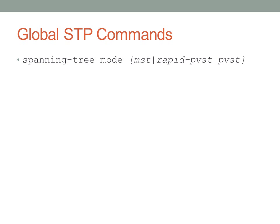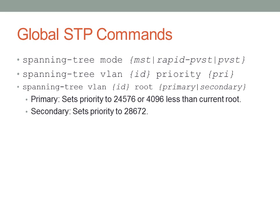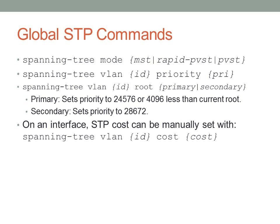Now let's look at global spanning tree commands. 'Spanning-tree mode' determines what type of spanning tree is running — MST, Rapid PVST+, or PVST. The default is per-VLAN spanning tree. Since Cisco switches do per-VLAN spanning tree, you can specify the spanning tree priority for each individual VLAN. You can say 'spanning-tree vlan ID root primary' or 'root secondary' to set default priority values that work very well. On a particular interface, you can also change the spanning tree cost per VLAN with 'spanning-tree vlan X cost', which allows for interesting implications like load balancing.